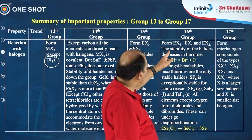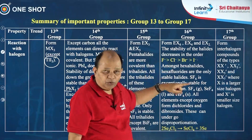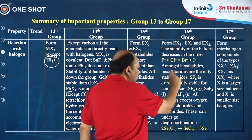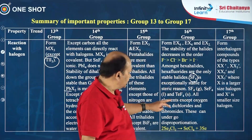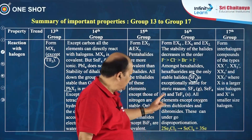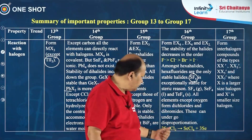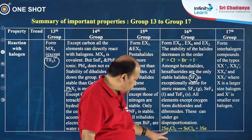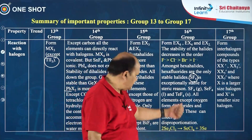Regarding group 16 halides, they form EX6, EX4, and EX2 type halides. The stability order is: fluorides > chlorides > bromides > iodides. Among hexahalides, only hexafluorides are stable; sulphur hexafluoride is exceptionally stable due to steric reasons. SF4 is a gas, SeF4 is a liquid, and TeF4 is a solid. All elements except oxygen form dichlorides and dibromides. These dichlorides can undergo disproportionation reaction — for example, selenium goes from the +1 state to the +4 state and 0, showing both oxidation and reduction.